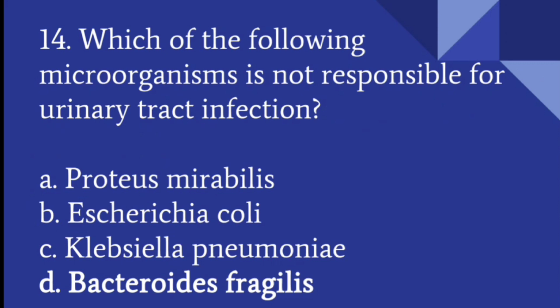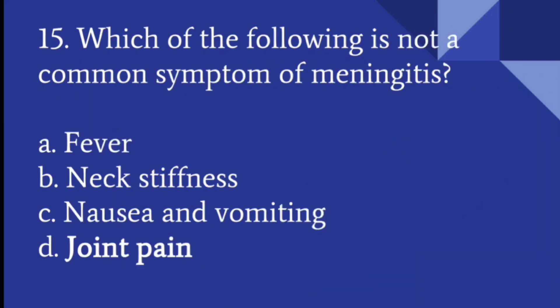Which of the following microorganism is not responsible for urinary tract infection? Bacteroides fragilis is not the microorganism responsible for urinary tract infection. Otherwise, Proteus mirabilis, E. coli, and Klebsiella are the organisms we have heard of as causing urinary tract infection.